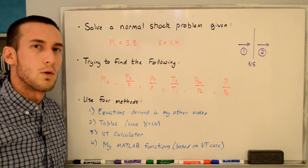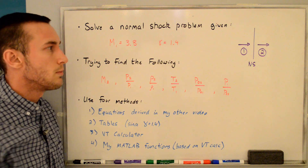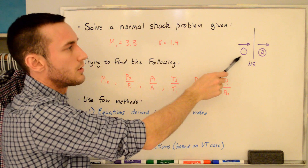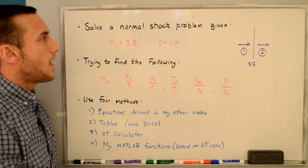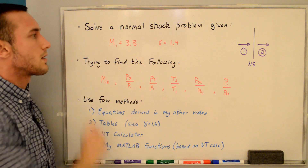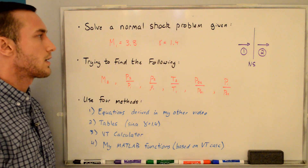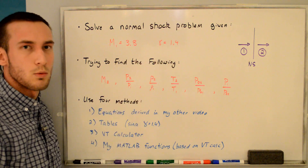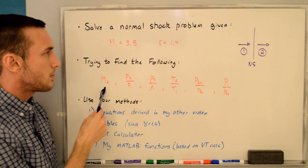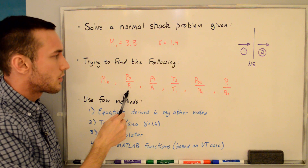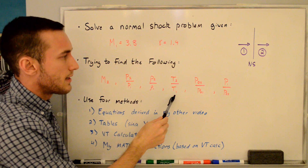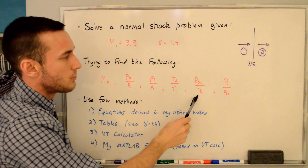In this video we'll be solving a normal shock problem. You can see a schematic here where state one is the upstream conditions and state two is the downstream conditions. The two knowns are the upstream Mach number M1 = 3.8, which is supersonic, and the ratio of specific heats gamma = 1.4. We'll be solving for the downstream Mach number, static pressure ratio, static density ratio, static temperature ratio, and stagnation pressure ratio.